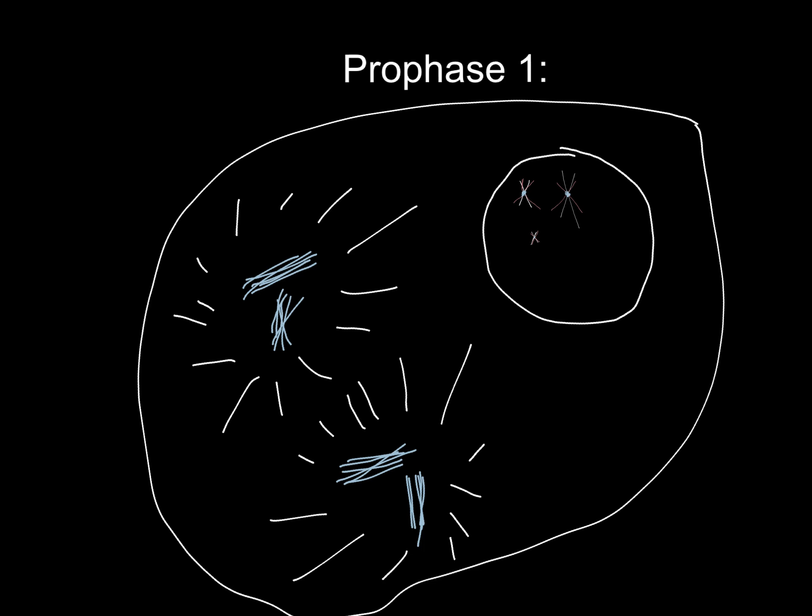After that, the chromosomes coil up and the spindle forms. Homologous chromosomes come together and match gene by gene, forming a tetrad. The four chromatids make up the tetrad, as shown right here. Then crossing over may occur when chromatids exchange genetic material.